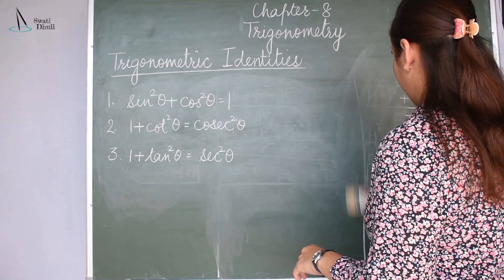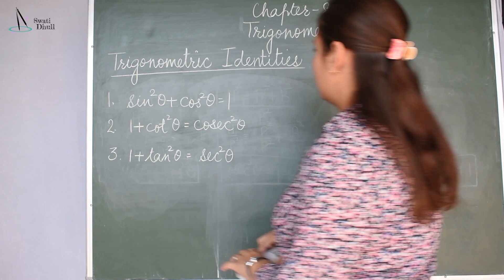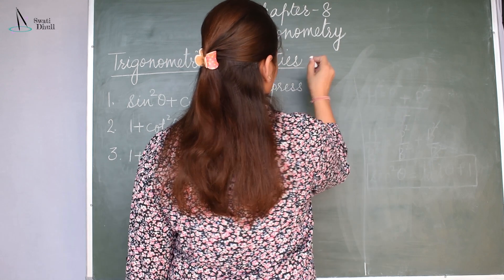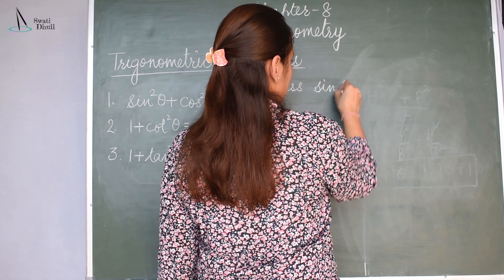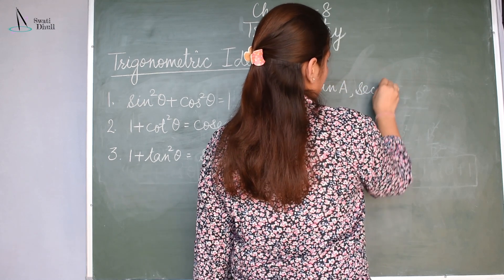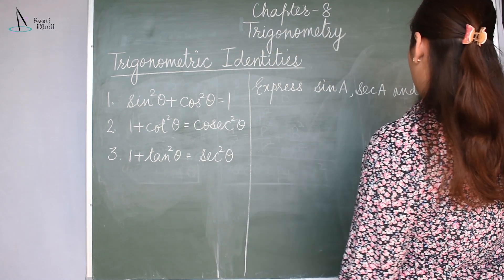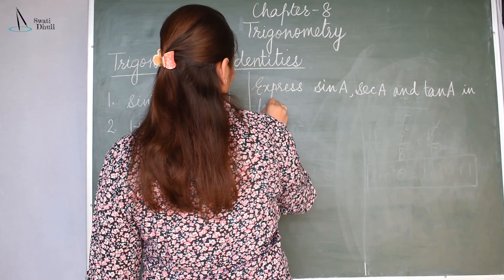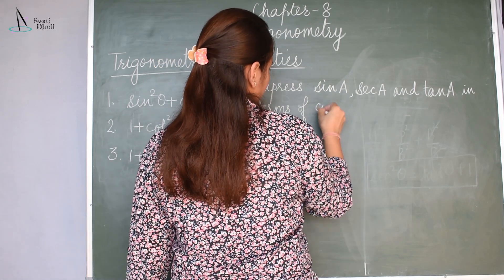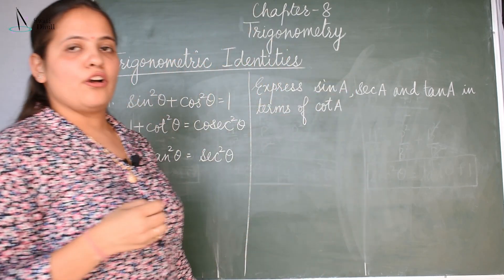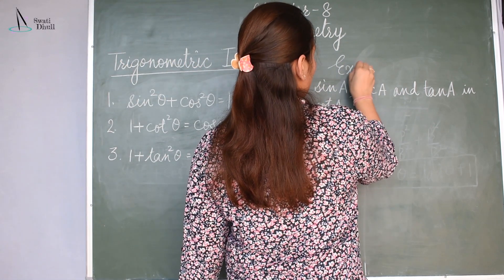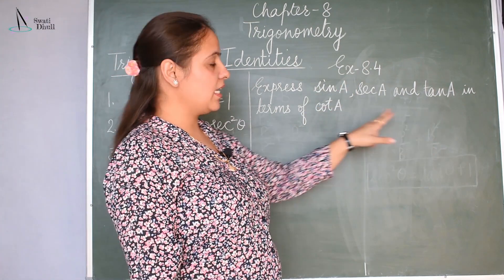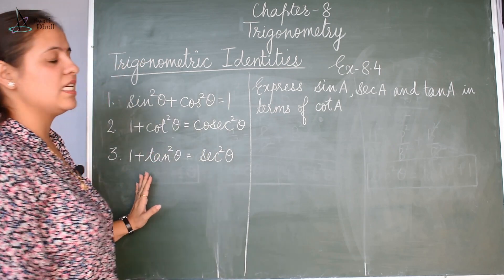Now, given question 1 from exercise 8.4 in NCERT: express sin A, sec A, and tan A in terms of cot A. So you have to express these three trigonometric ratios in terms of cot A, and we have to use these identities.